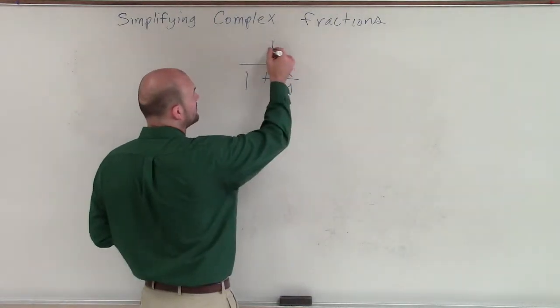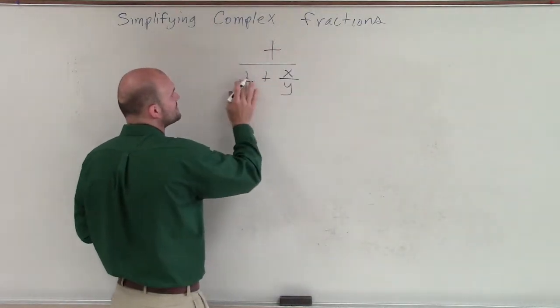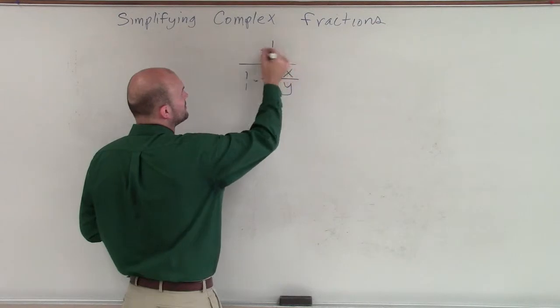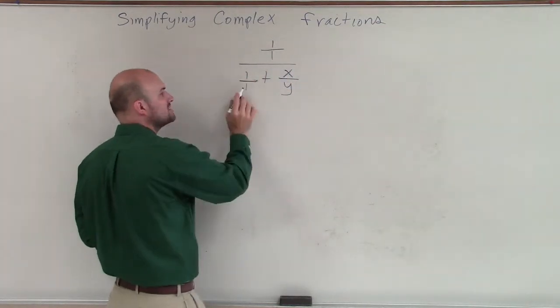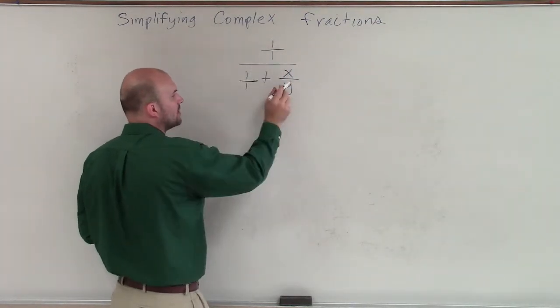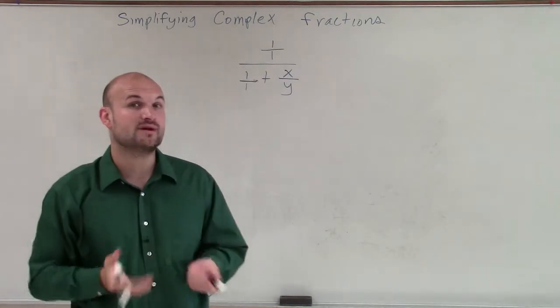So we notice that each one of these whole numbers, we can just rewrite those as 1 over 1. So we know the denominator here is 1, denominator here is 1, and the denominator here is going to be y.